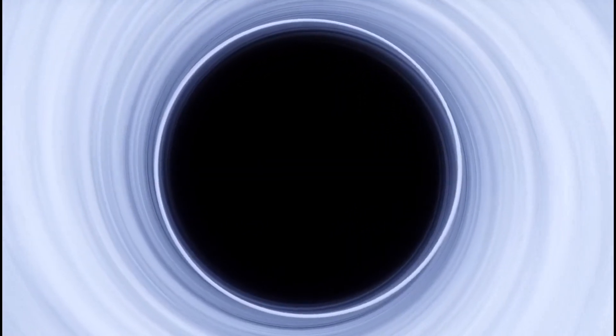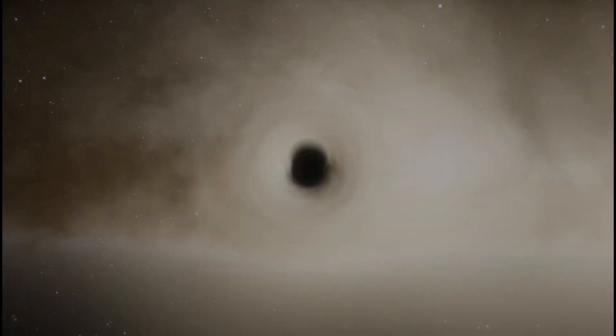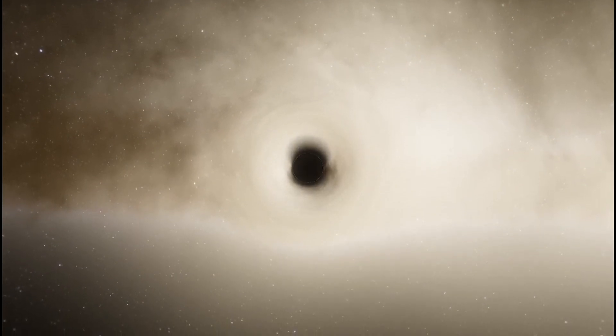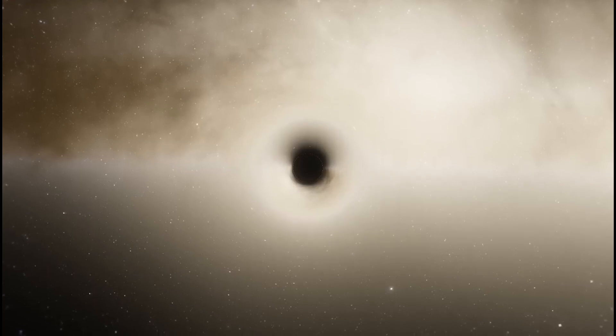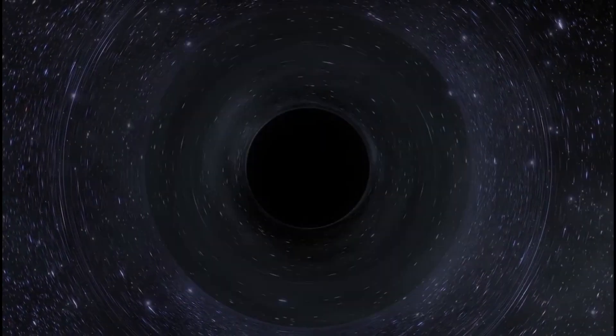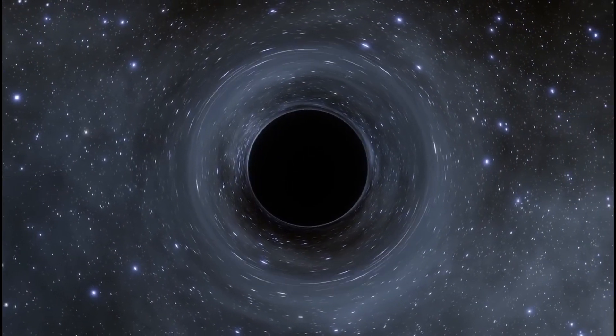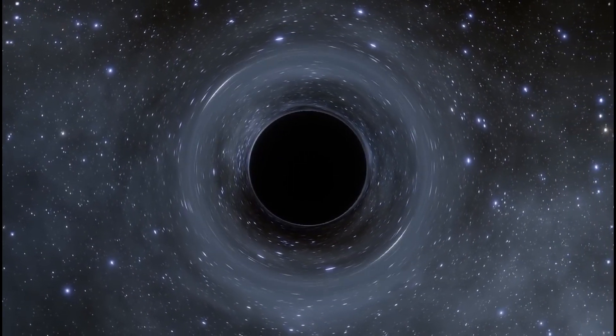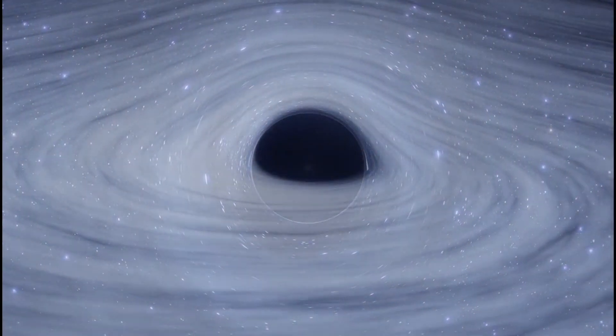Supermassive black holes play a crucial role in influencing the matter and energy around them. Their powerful gravitational pull can affect star formation rates in their host galaxies, often regulating the amount of gas available for new stars. Additionally, as matter spirals into these black holes, it heats up and emits radiation, creating energetic jets and outflows that can impact the interstellar medium. This interaction between supermassive black holes and their environments is vital for understanding the evolution of galaxies and the universe as a whole.